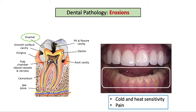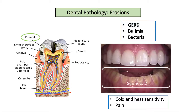Erosion can cause cold and hot sensitivity, as well as pain due to the exposed pulp. Dental erosion has numerous causes, but on the boards it's often linked with GERD and bulimia, sharing in common tooth exposure to erosive gastric acid.